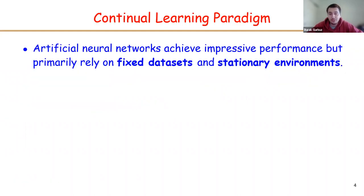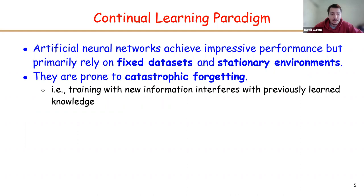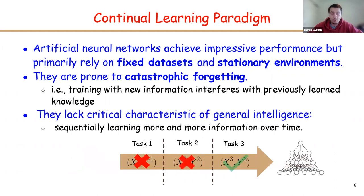Artificial neural networks achieve great performance on a wide variety of tasks, but they primarily rely on fixed datasets and stationary environments. In continual learning, however, we have sequential tasks that change in time, so the environment is dynamic. Under such a continual learning scenario, models forget previously learned information upon learning a new task. This is one of the main challenges in continual learning, and it's called catastrophic forgetting. Because of this, artificial neural networks lack a critical characteristic of general intelligence: sequentially learning more and more information over time.